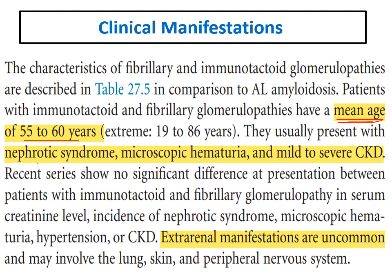The most common presentation is nephrotic syndrome — nephrotic range of proteinuria. Some cases show microscopic hematuria, and in most cases there is renal impairment of variable degrees. When I have a patient with nephrotic syndrome, microscopic hematuria, and renal impairment, I should put immunotactoid in my differential diagnosis.